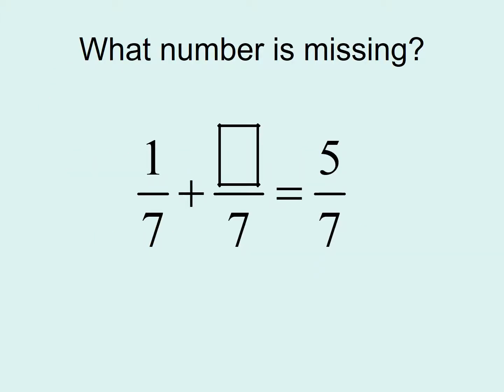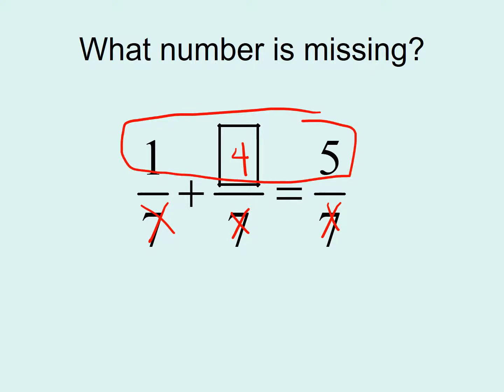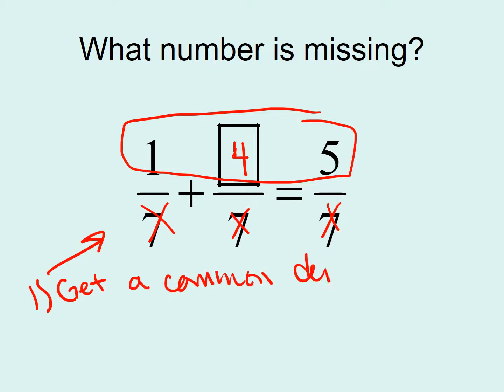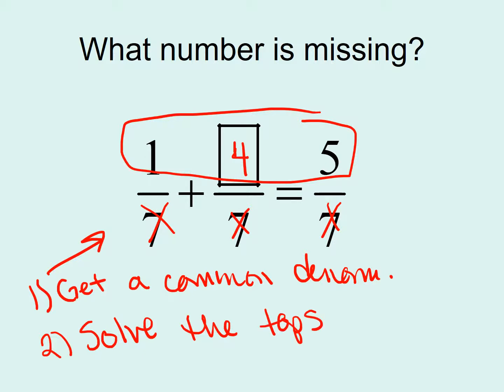If you were given this problem — one-seventh plus something over seven is equal to five over seven — you'd almost immediately tell me that one plus four equals five. You probably didn't even think about how all these had a common denominator; you just focused on one plus four is equal to five. So in today's lesson, we're going to be focusing on just the numerator to solve. Once we have a common denominator, the goal is to get a common denominator, and then just solve the tops. Once we have a common denominator like all these fractions, we're just going to focus on the numerator to figure out what x is.